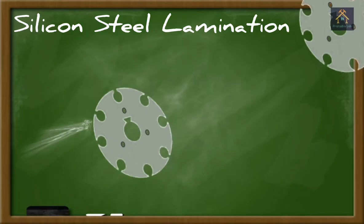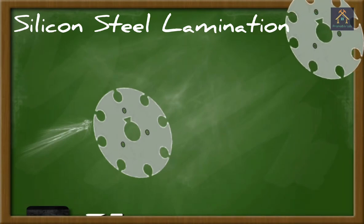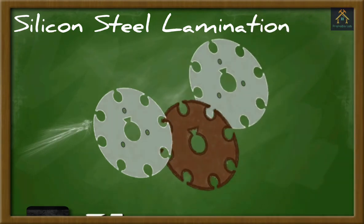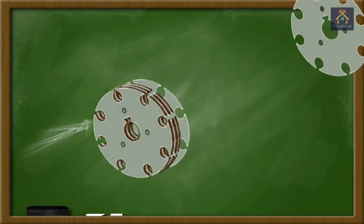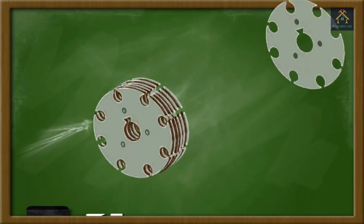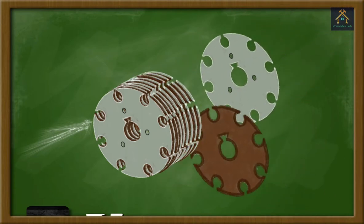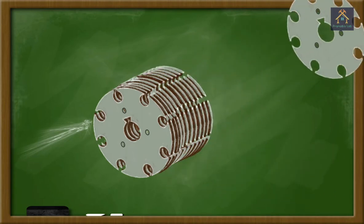To reduce the eddy current loss, specially designed silicon steel stampings are stacked together one after one. Between two different stampings, an impregnated paper insulation is inserted or varnish is painted. The stacking process is continued until a cylindrical structure is formed.